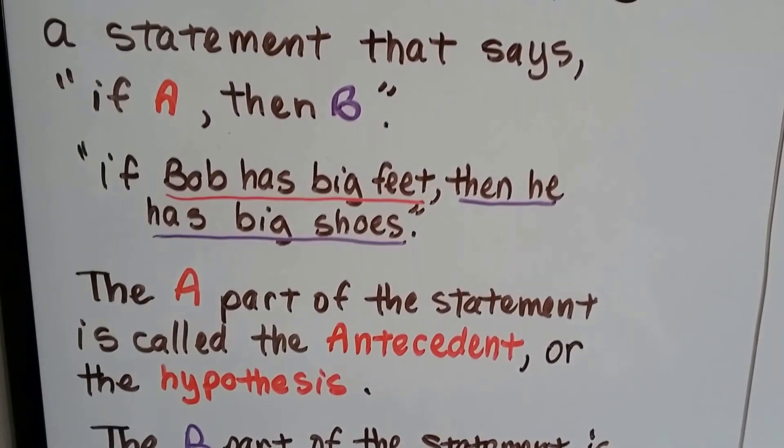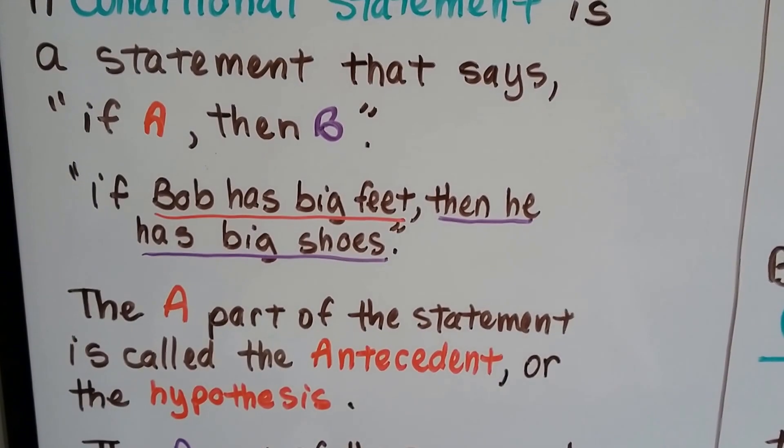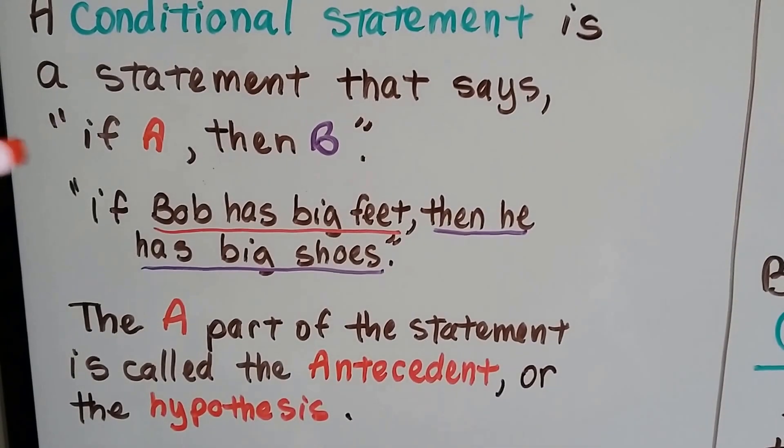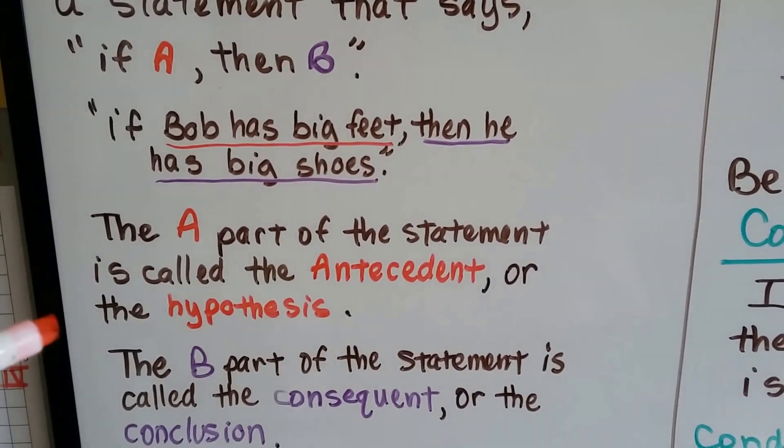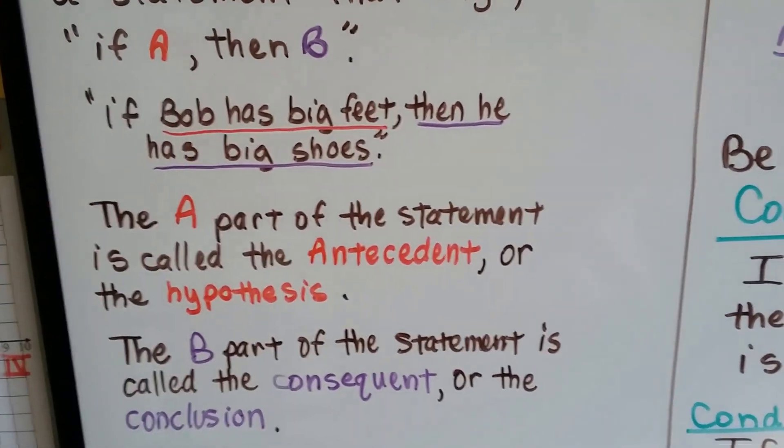The A part of the statement is called the antecedent or the hypothesis. So the beginning is the hypothesis. The B part of the statement is called the consequent or the conclusion.